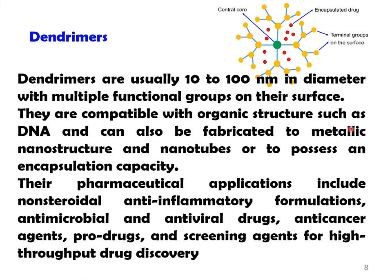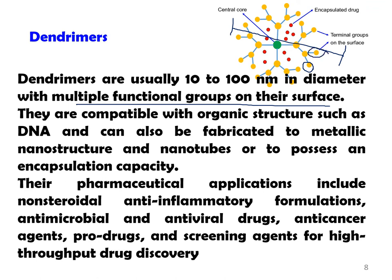Another example of three-dimensional nanoparticles is dendrimers. A diagrammatic representation is available on the right-hand side top corner — these are highly networked structures. Dendrimers are usually 10 to 100 nanometers in diameter, so however complex the structure, the diameter lies within the nanometric range. They have multiple functional groups on their surface — the yellow spheres on the surface represent functional groups that can interact with drug molecules or with molecules within the body.